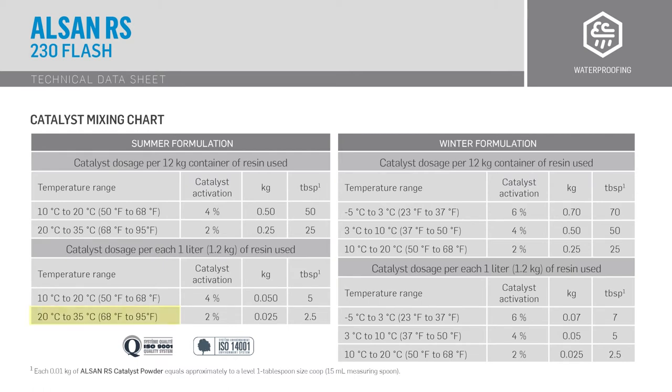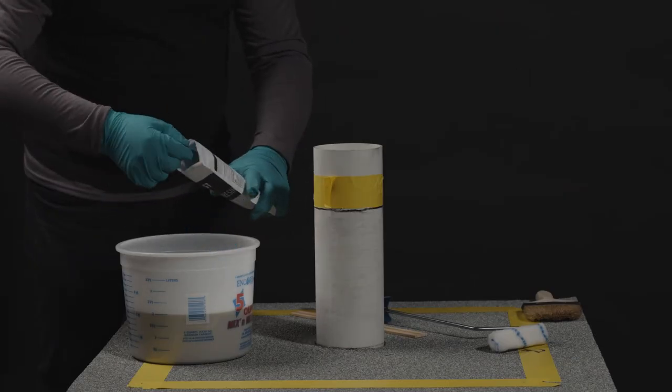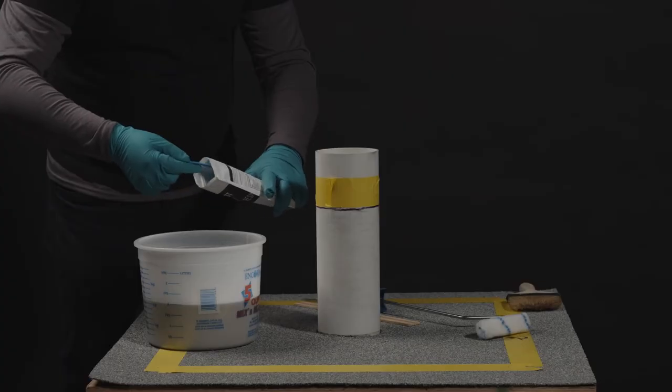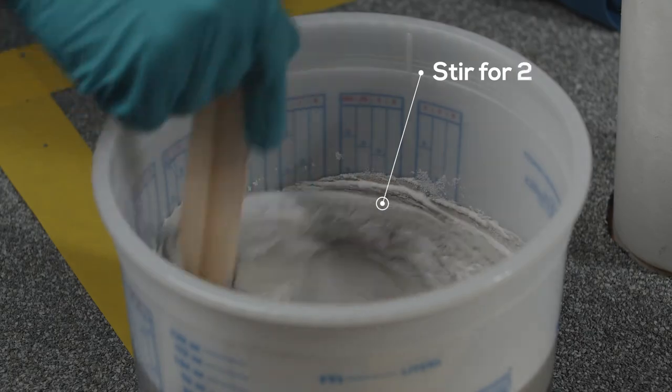As an example, at 21 degrees Celsius or 75 degrees Fahrenheit, the ratio of catalyst needed is 2%, which corresponds to 2.5 tablespoons per liter of PMMA resin. Add the required amount of catalyst to resin and stir for 2 minutes.